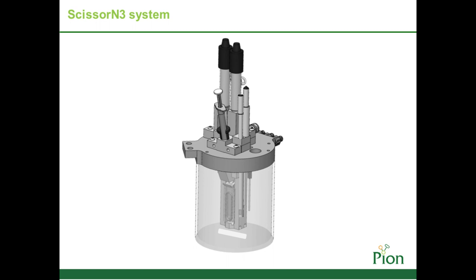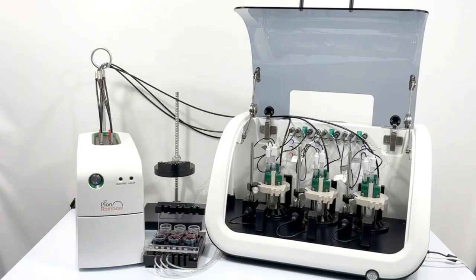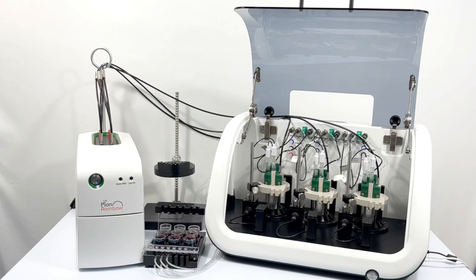We'll now look at the system in action — the parts, how they fit together, and how this couples with our Rainbow technology. Today we'll look at the Scissor N3 coupled with the Rainbow R6 technology. On the left-hand side we have the Rainbow R6, and on the right-hand side we have the Scissor N3 system, which allows three assays to be run independently or simultaneously.